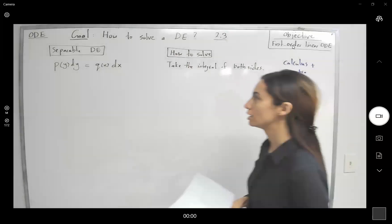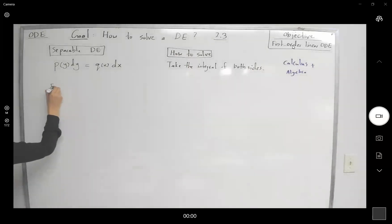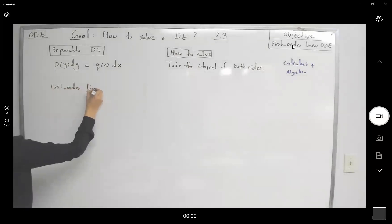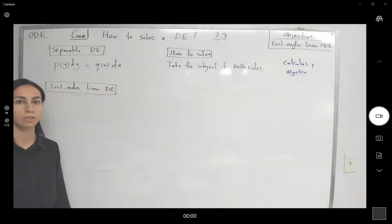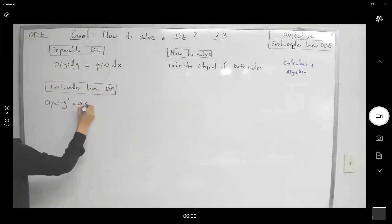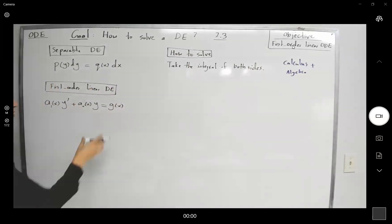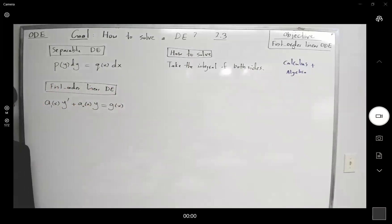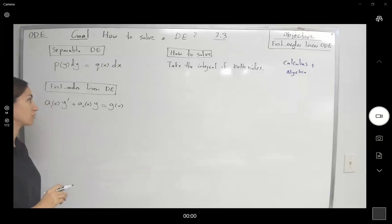Now, what if you have a first-order linear differential equation? It doesn't matter if it's homogeneous or non-homogeneous — the steps are the same. In general, we can write it as: a₁(x) y′ plus a₀(x) y equals a function in x. If it's homogeneous, that function is going to be zero. These steps are preparation before taking the integral for this type of differential equation.